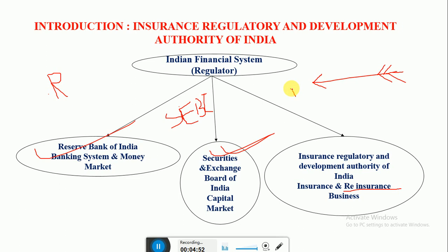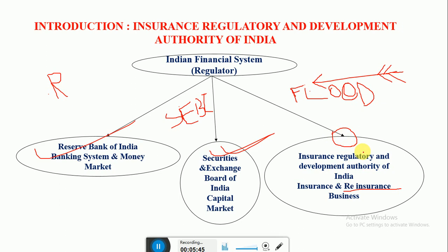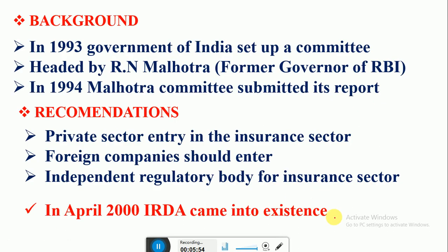For example, suppose in a commercial complex all businessmen have shops with insurance cover against flood. If a flood happens, all policyholders will claim at once. If the insurance company is not sure it can cover all those claims, it may take an insurance cover from another insurance company to come to its rescue. That is reinsurance.